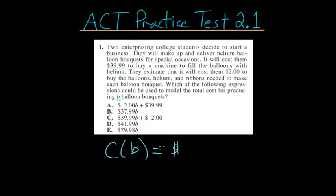So no matter how many balloon bouquets we make, we will always at first have to pay this $39.99. And then we're told that it's $2 to buy the balloons, helium, and ribbons needed to make each balloon bouquet. So essentially it's $2 per bouquet.